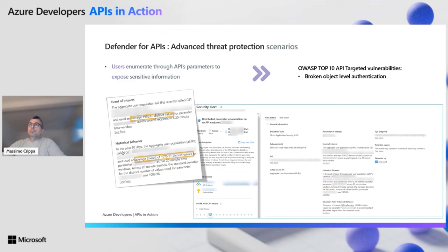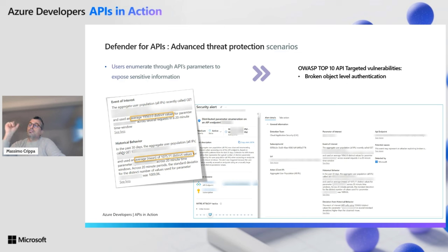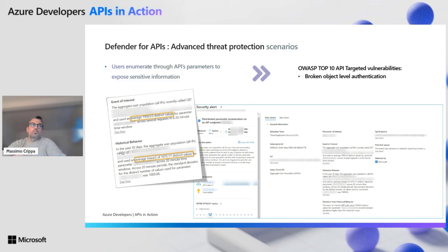Another example was parameter enumeration. A specific parameter was being called on average 1,000 times per 20 minutes, and it moved to 20,000 — which is huge. In our case it was also legitimate traffic, because it was a session parameter: during that promotion event, more users were accessing the platform, more users were interacting, and more distinct sessions were created. But the same kind of detection applied to other types of parameters could be quite a critical security signal that could lead to broken object-level authentication.